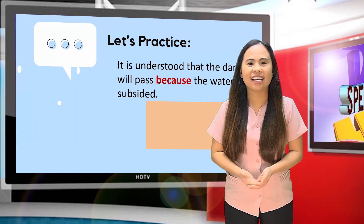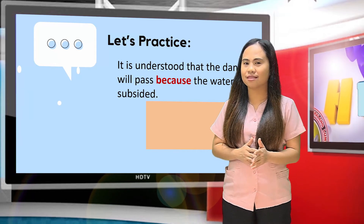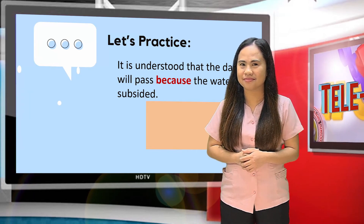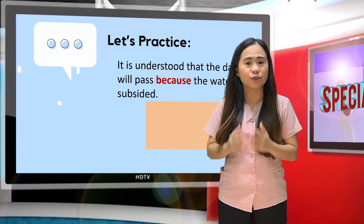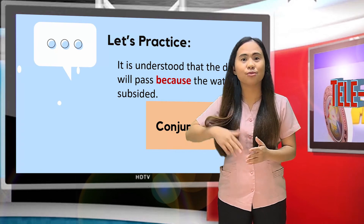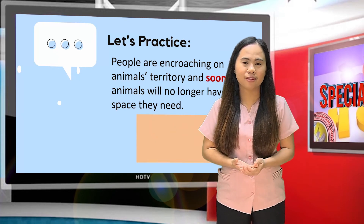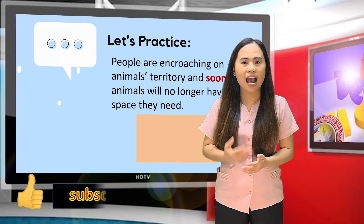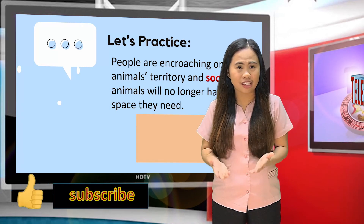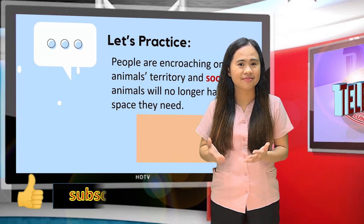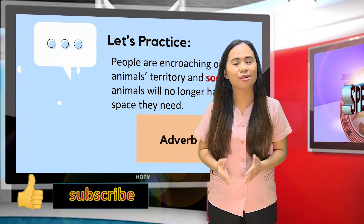Next sentence: 'It is understood that the danger will pass because the water has subsided.' This is an example of a conjunction used to connect reason to the action. And lastly: 'People are encroaching on animal territory and soon animals will no longer have the spacing.' This is an example of the use of an adverb to show sequence or time.